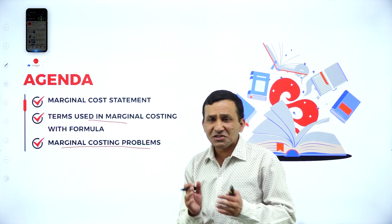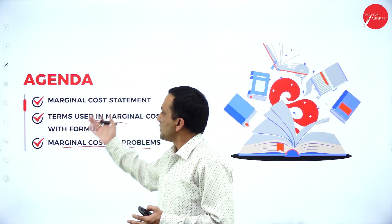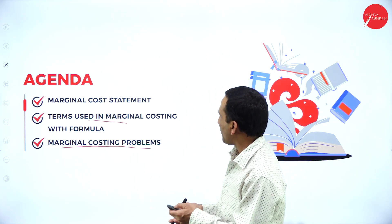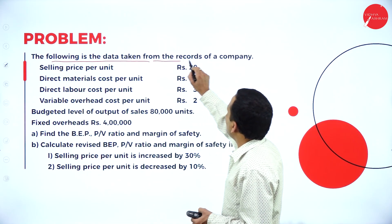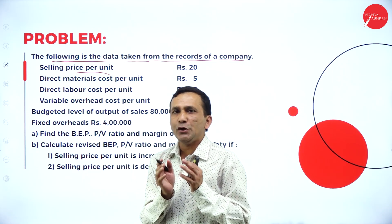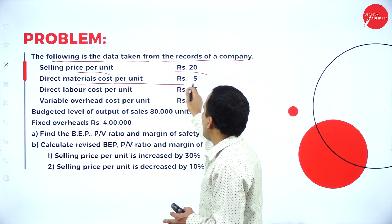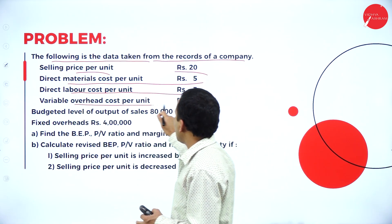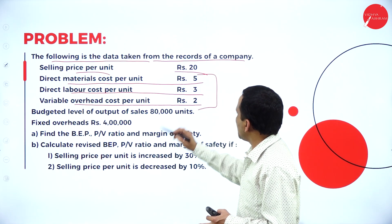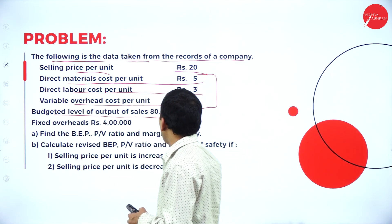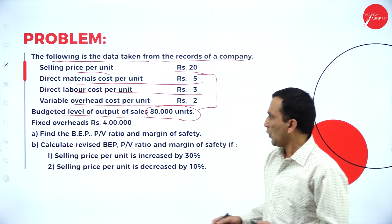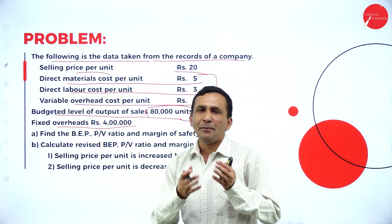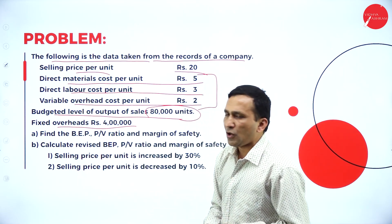We are solving marginal costing problems, continuing from the last session on statements. The following data is taken from the records of the company: selling price per unit is ₹20, direct material cost per unit is ₹5, direct labor cost per unit is ₹3, and variable overhead cost is ₹2 — these three items fall under variable cost. Budgeted sales output is 80,000 units, and fixed overheads are ₹4 lakh. Fixed cost per unit = ₹4 lakh ÷ 80,000 units.